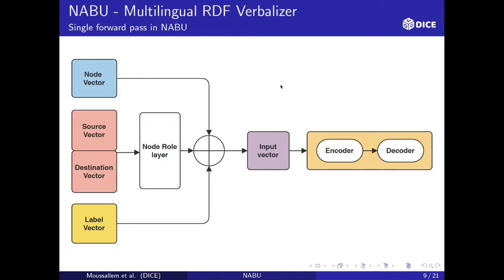Here we can see a single forward pass in NABU. On the left side, we have the node vector containing the nodes of the graph. The source vector contains the subjects and predicates — nodes as subjects and edges as predicates. Then the destination vector contains predicates and objects. We also have the label vector from the RDF labels. We combine these as an input vector, which is then used in the encoder and the decoder.